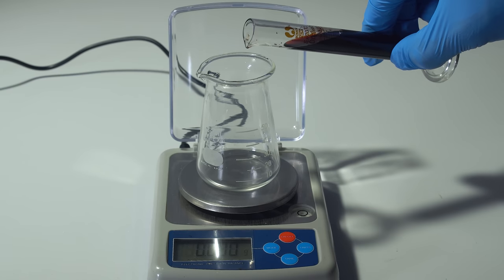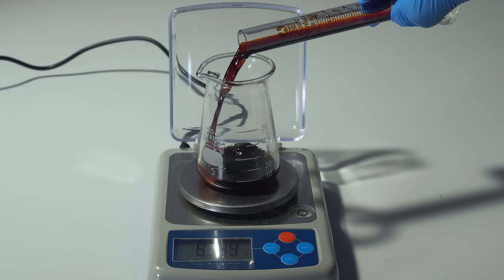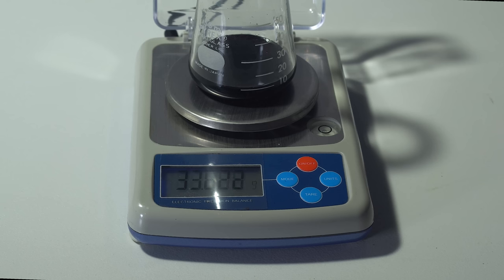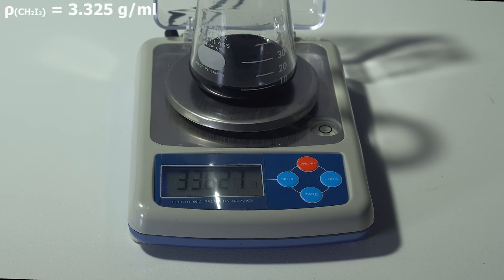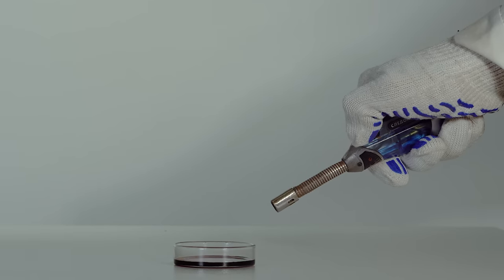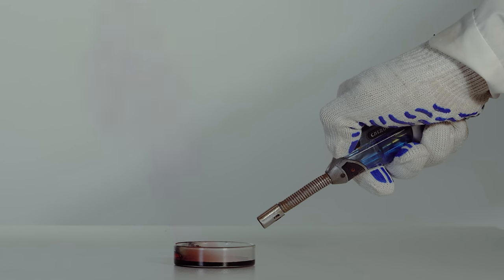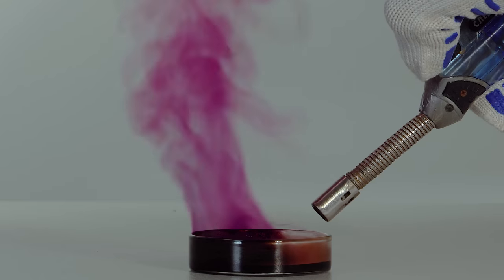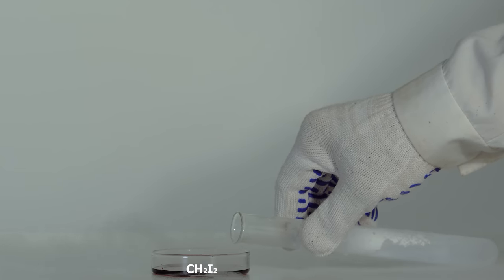This dark liquid, that ideally must be slightly yellow, is methylene iodide. It is the heaviest organic liquid with a density of more than 3.3 grams per milliliter. Under ordinary conditions, setting it on fire is impossible. This liquid is 95% iodine. However, mixing it with liquid oxygen causes combustion with a profuse emission of iodine.